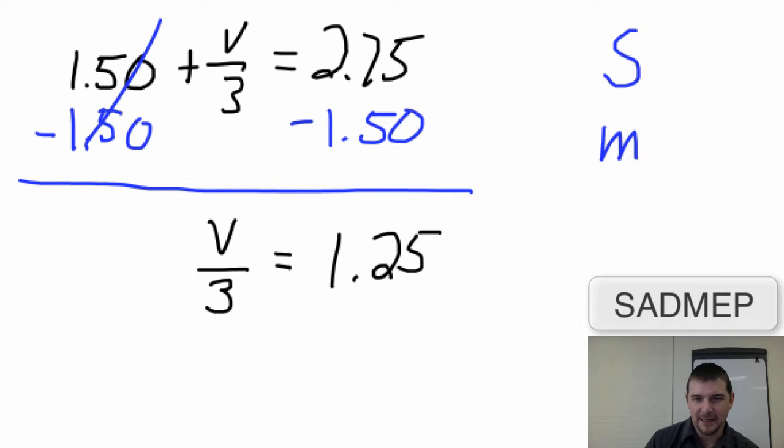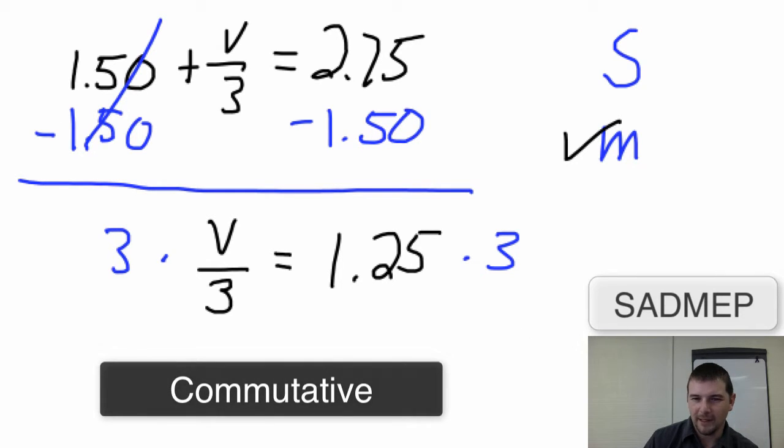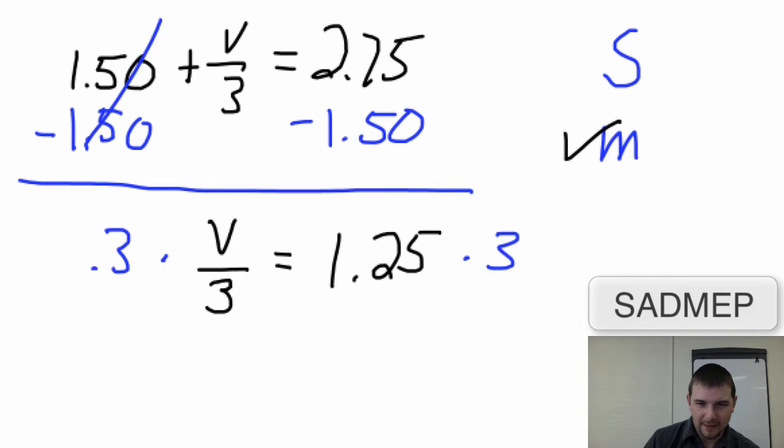And our final step. We're to that M step, or to multiply. The inverse of dividing by 3 is to multiply by 3. Change colors. Multiply by 3. Multiply by 3. And it doesn't matter that I'm multiplying by 3 from the left on this side of the equation and that I'm multiplying by 3 on the right or from the right on this side of the equation, because multiplication is commutative. Meaning we can change the order and still get the same answer.